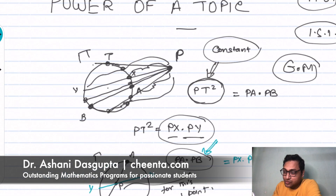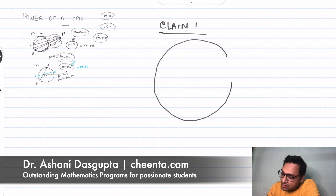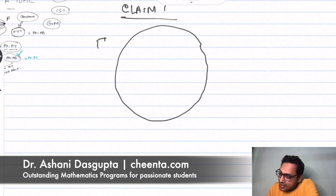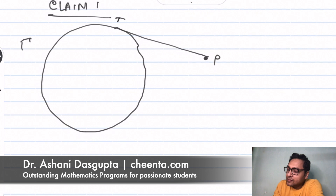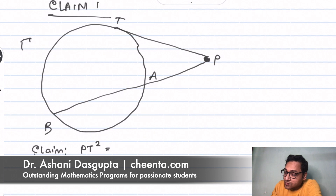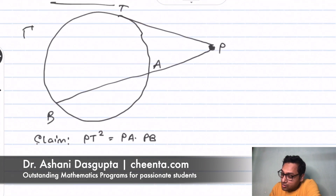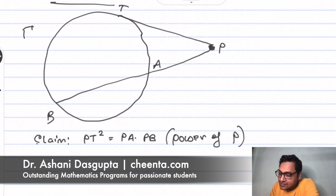Of course, I made a lot of claims and I need to prove them. Claim one: if I have a circle gamma and a point P outside it, then PT² equals PA times PB. This value is known as the Power of the Point P with respect to the circle gamma.